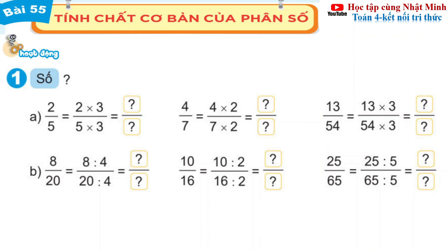Phần hoạt động câu A: 2 phần 5 bằng 2 nhân 3 trên 5 nhân 3 bằng 6 phần 15. Tiếp theo 4 phần 7 bằng 4 nhân 2 trên 7 nhân 2 bằng 8 phần 14. Tiếp theo 13 phần 54: 13 nhân 3 bằng 39, 54 nhân 3 bằng 162, chúng ta được 39 phần 162.